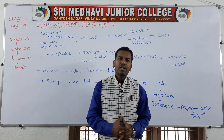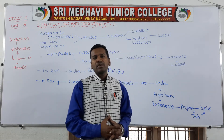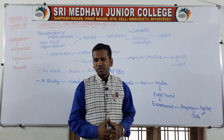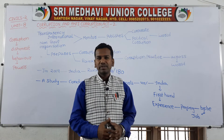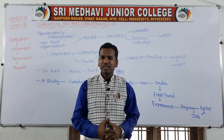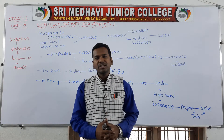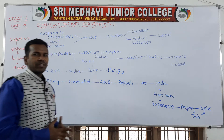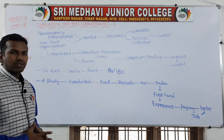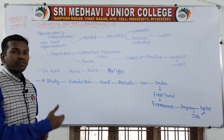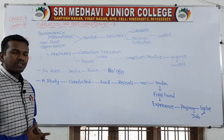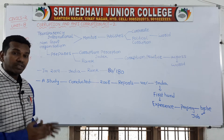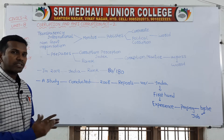Whenever persons in power make dishonest behavior, they are called corrupt. These corruptions mainly involve the public sector — people in various positions and those who get their power from the government.